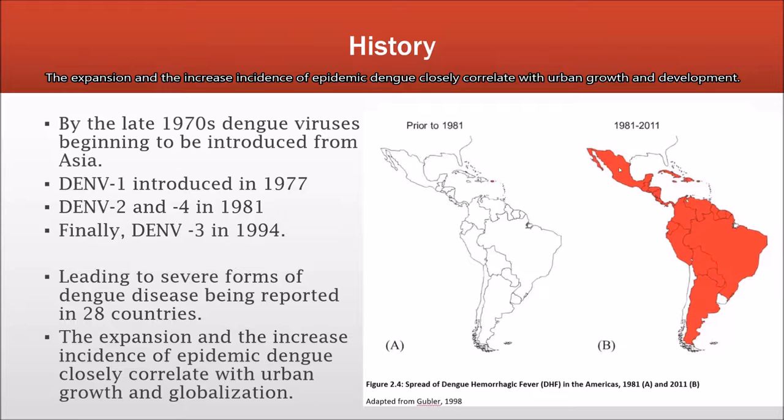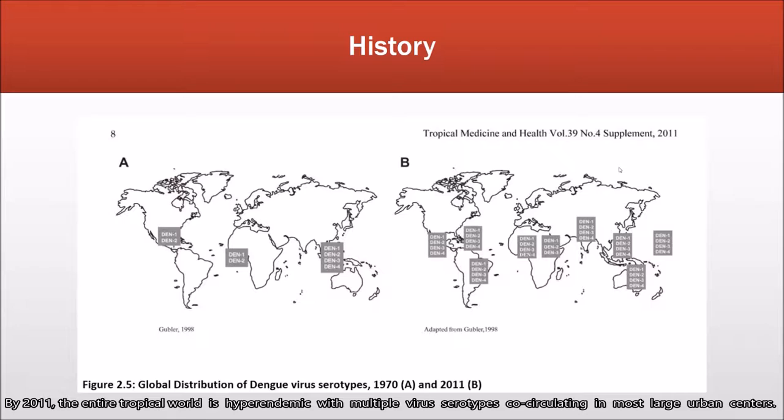The expansion and increase in incidence of epidemic dengue closely correlated with urban growth and development. By 2011, the entire tropical world was hyperendemic, with multiple serotypes of the virus cross-circulating in most urban centers.